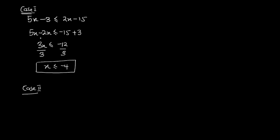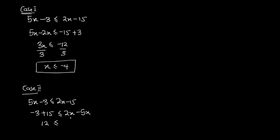Now in Case 2, I send the 5x to the other side of the inequality instead. Starting from 5x minus 3 less than or equal to 2x minus 15, I move 5x across, leaving negative 3, and send negative 15 to the other side as plus 15, giving less than or equal to 2x minus 5x. So I have: negative 3 plus 15 gives 12, less than or equal to 2x minus 5x, which gives negative 3x. Now I divide both sides by negative 3.